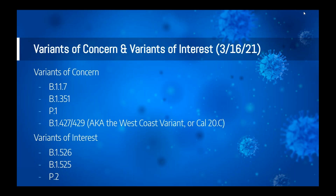As we think about variants of concern and variants of interest, we should remember that the vast majority of positive tests are not currently being sent in the United States for variant testing. The usual PCR or antigen test is not able to determine whether or not there is a variant of concern or of interest. To test for variants, the usual approach involves a more sophisticated technique called sequencing, to actually understand the specific RNA code and compare that sequence to the sequences of different known variants.